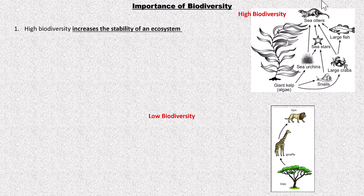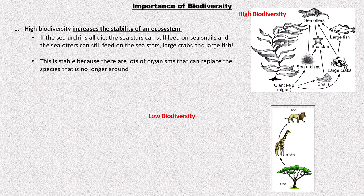The importance of biodiversity: the first big importance is it increases stability. If the sea urchins all die, for example, in the high biodiversity diagram, the sea stars could still eat the snails — they have another alternate food source. And the sea otters lose the sea urchins, but they could still eat sea stars, large crabs, and large fish.